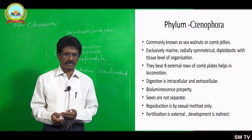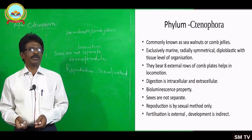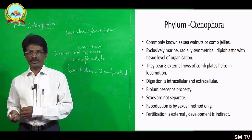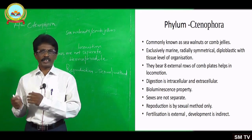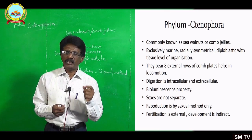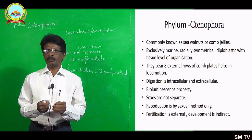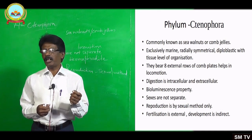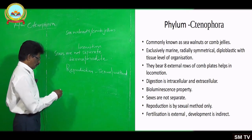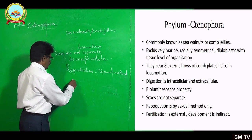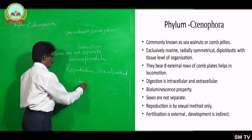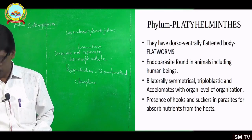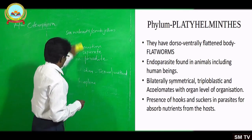Fertilization is external — the fusion of gametes takes place outside the body, in the aquatic medium, because these are all aquatic animals. The development is indirect — the development of the organism goes through many larval stages, which is called indirect development. An example for a ctenophoran is Ctenoplana.